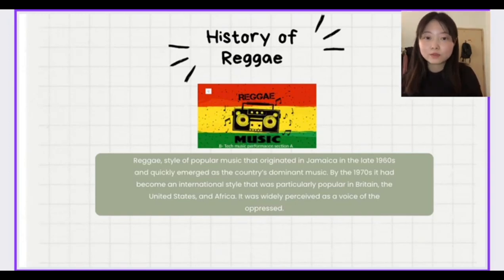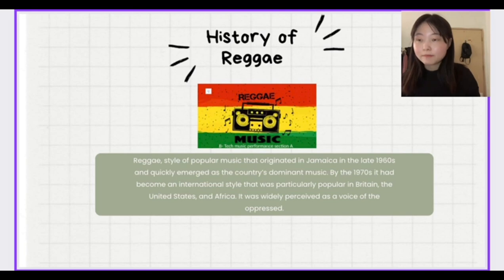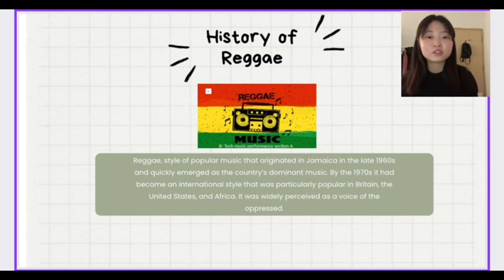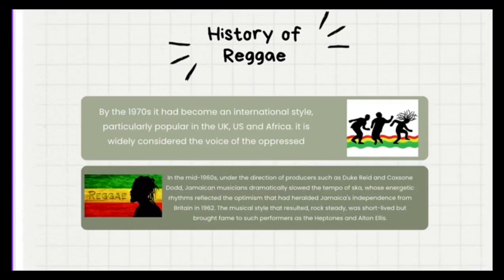First of all, I will talk about what is reggae music. Reggae is a style of popular music that originated in Jamaica in the late 1960s and quickly emerged as the country's dominant music by the 1970s. It has become an international style that was particularly popular in Britain, the United States and Africa. It was widely perceived as a voice of the oppressed.